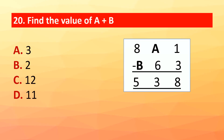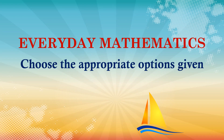Question 20: Find the value of A plus B. 8A1 minus B63 equals 538. The correct answer is option B: 2. Everyday Mathematics — choose the appropriate options.